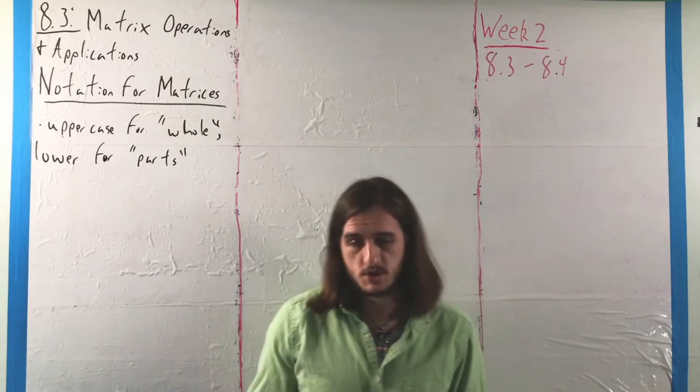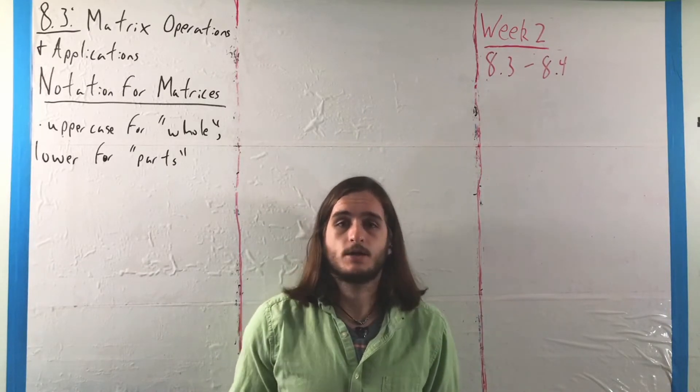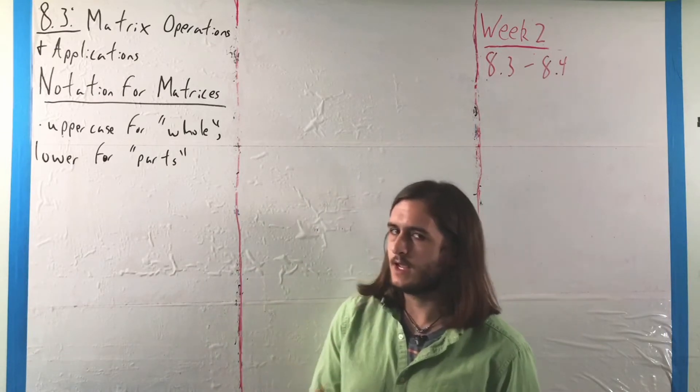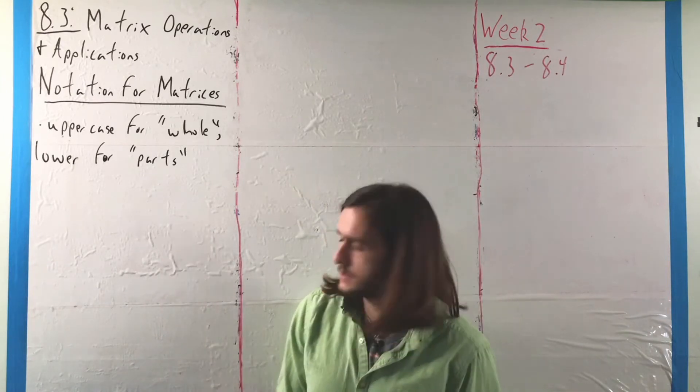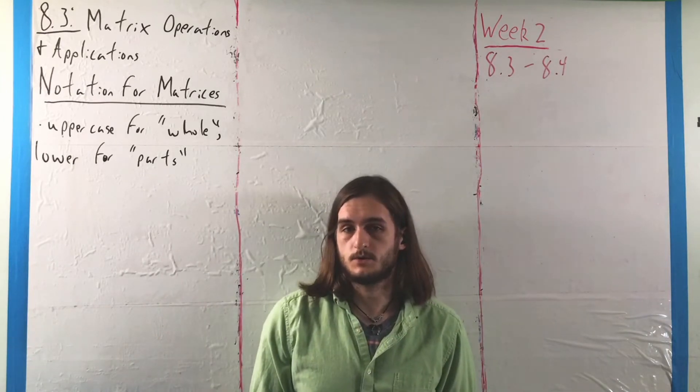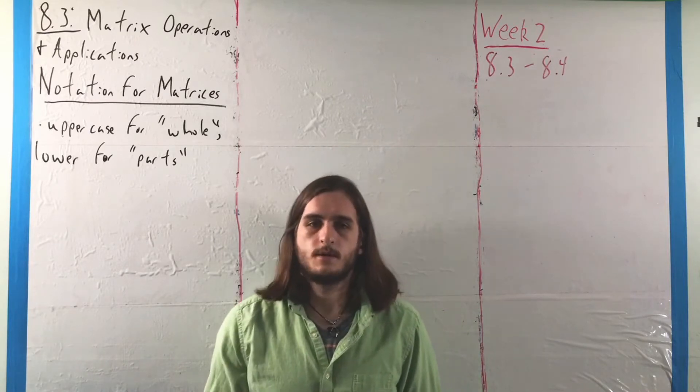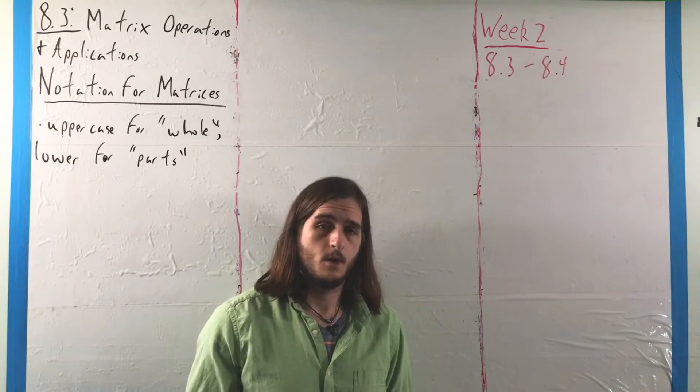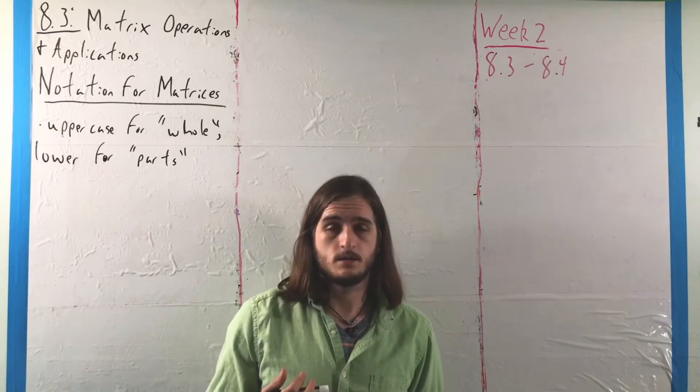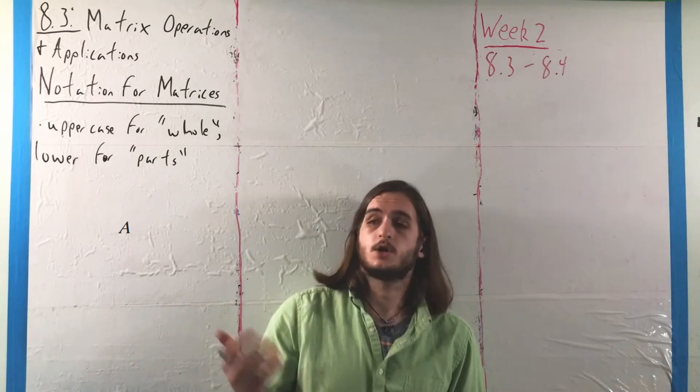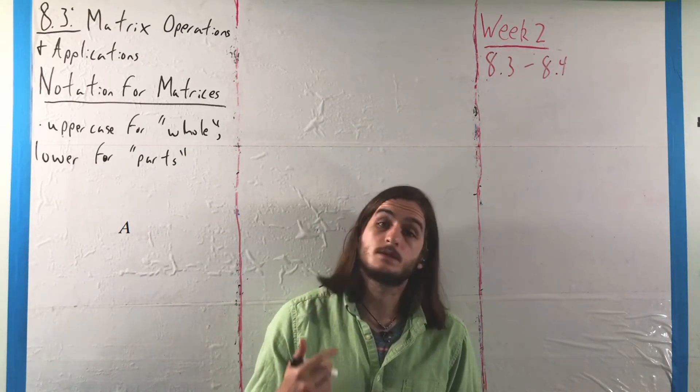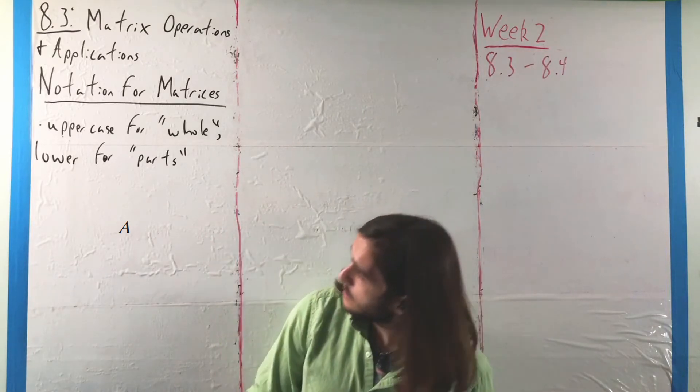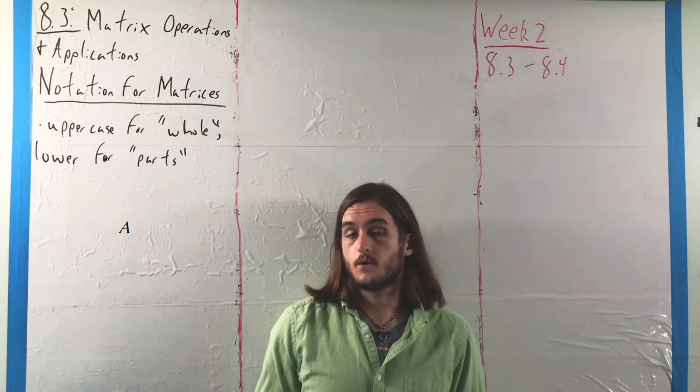We're going to look at matrices just as matrices, not necessarily attached to larger systems. First, we're going to more carefully define the notation we can work from. When talking about a matrix, we have two ways of looking at it. We can either talk about the entire construction - all of the rows and columns and elements inside the brackets - with a capital letter, uppercase for the whole thing.